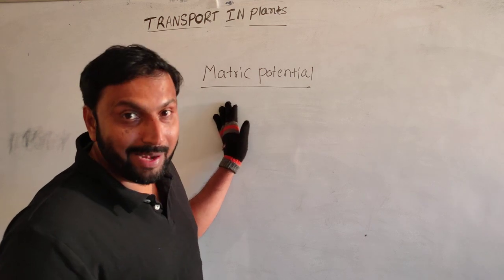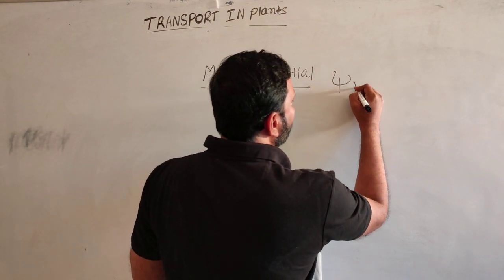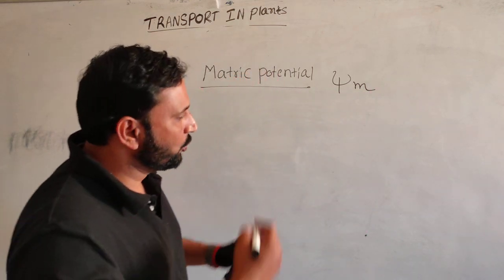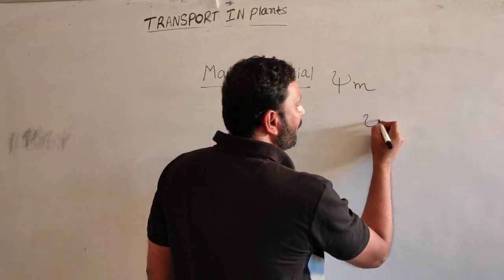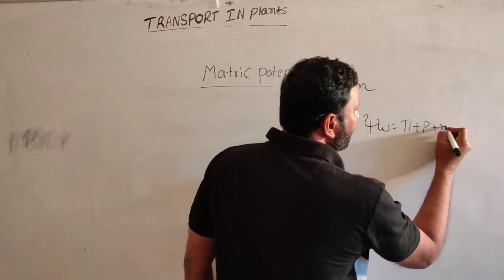Now our topic is matric potential. Matric potential symbol is ψm. Actually, water potential is the formula ψw = π + p + m.